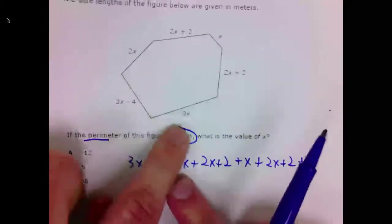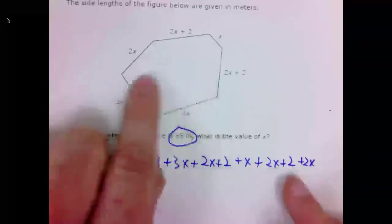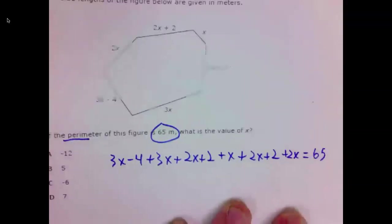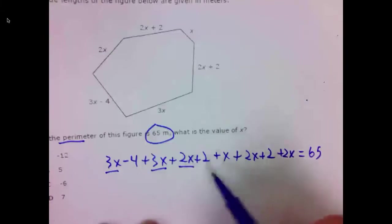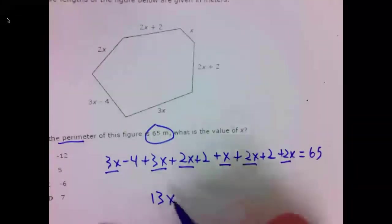And I think that's it. One, two, three, four, five. All six sides. This sum is equal to 65. Now, we will combine like terms. Three X plus three X is six X. Eight X. Nine X. Eleven X. Thirteen X.